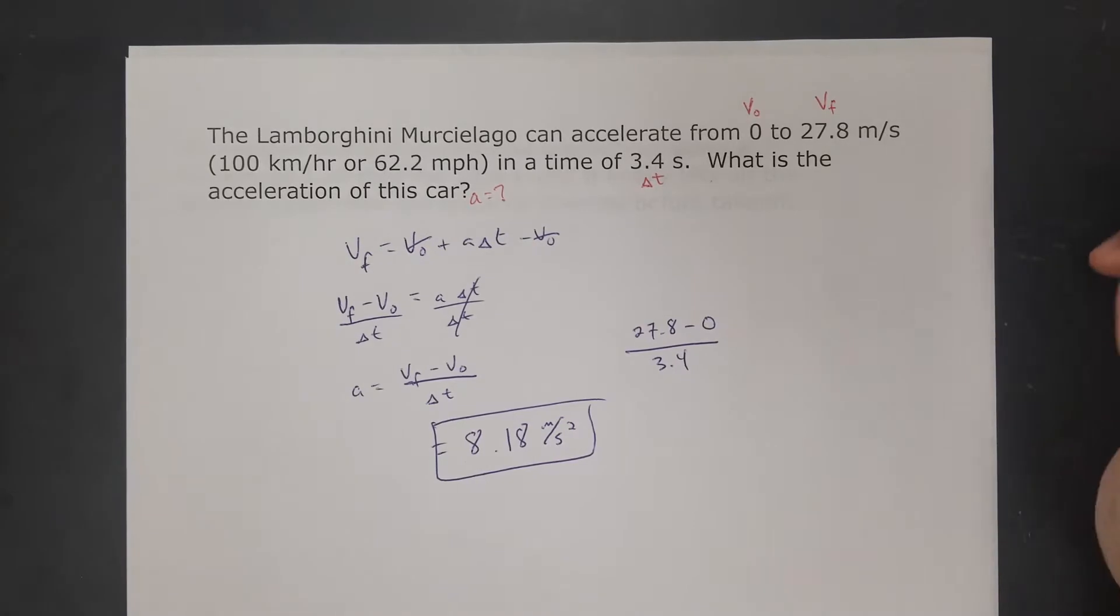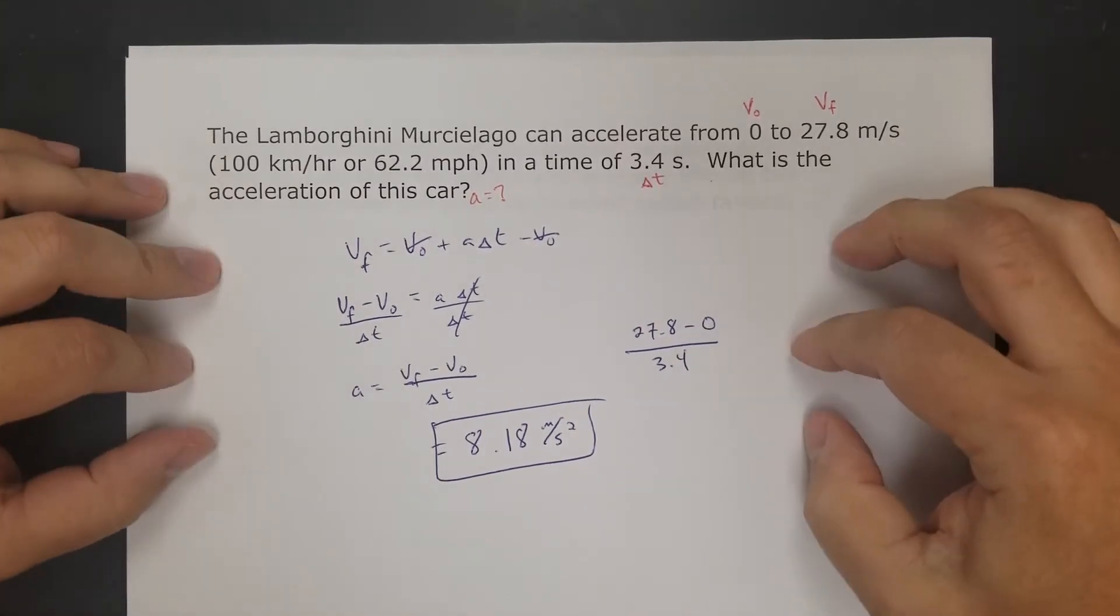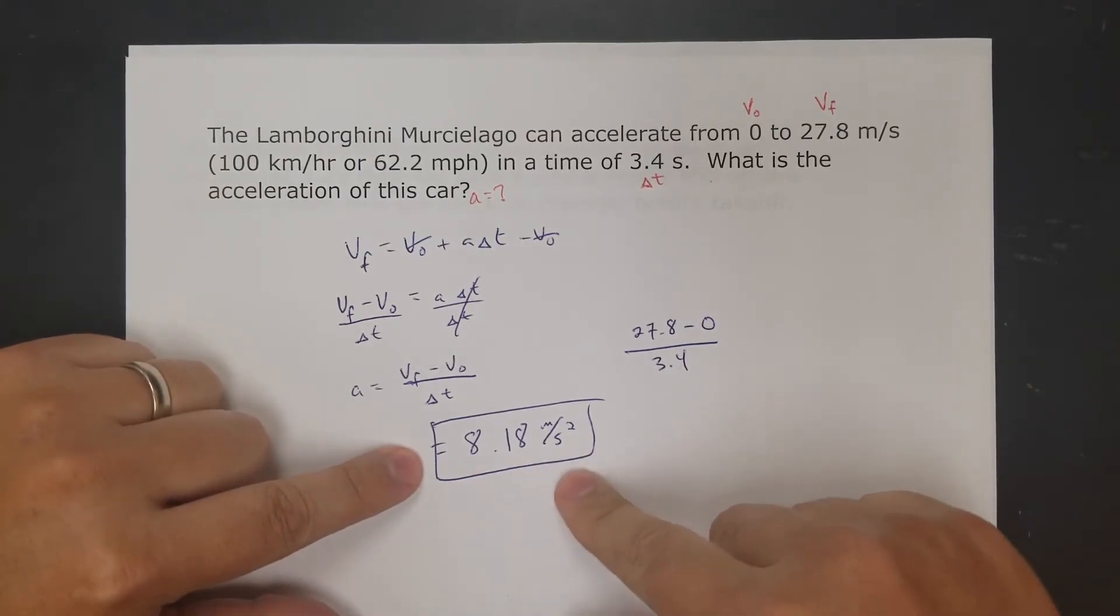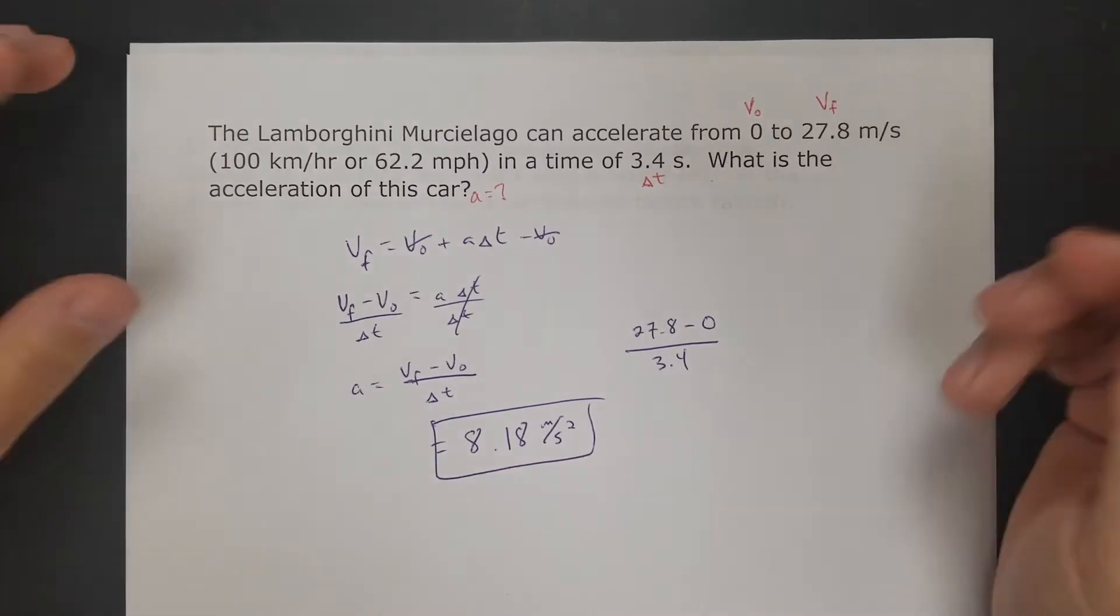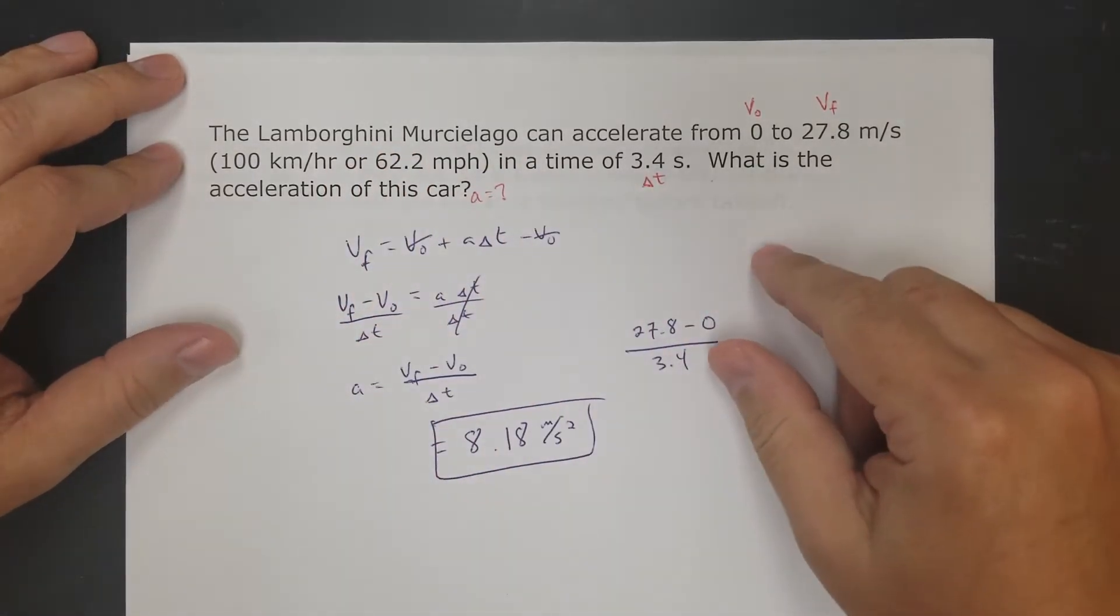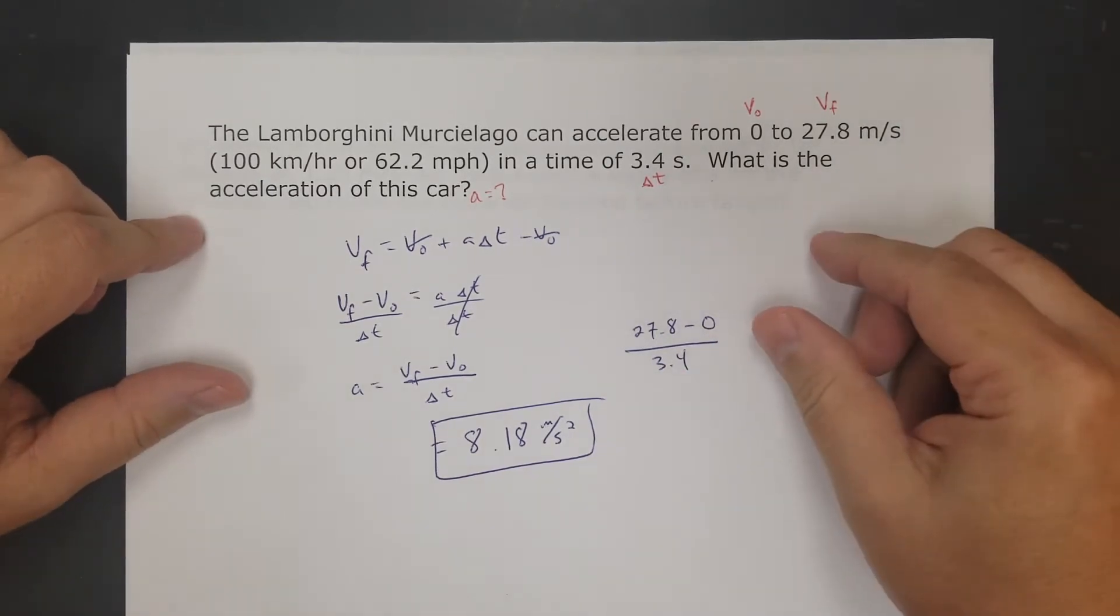The last thing when you're solving problems: does this make sense? Does this answer make sense? Let's think about it. 8.18 meters per second squared for a Lamborghini, that makes sense. 1 g is about 9.8 meters per second squared, so a super expensive sports car, that's a reasonable number. I didn't get something in the hundreds.